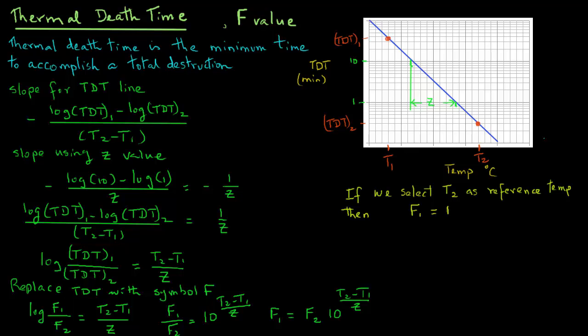So instead of F2 we say F reference, 10 raised to power TDT2, and then instead of TDT2 we write TDT reference minus TDT1 divided by Z.